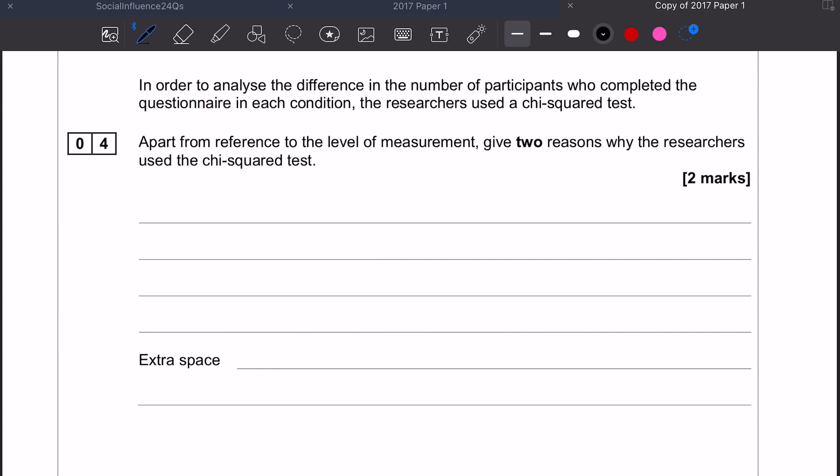Question number four is the first question in this paper on statistical testing. We have to use our knowledge of choosing an appropriate test because we're being asked to justify the choice the researchers made of using a chi-squared.